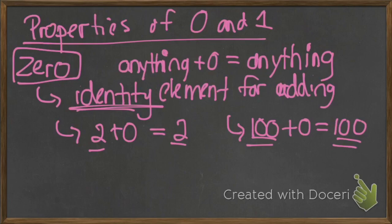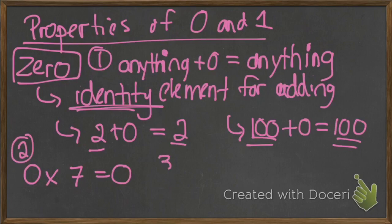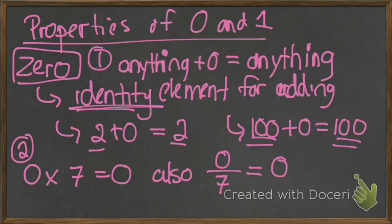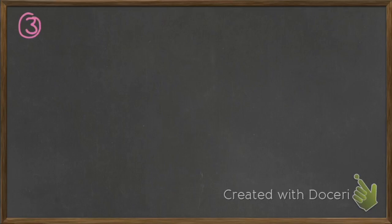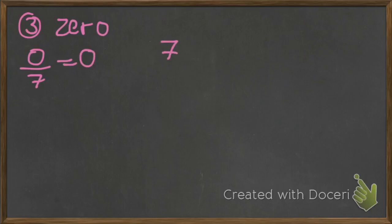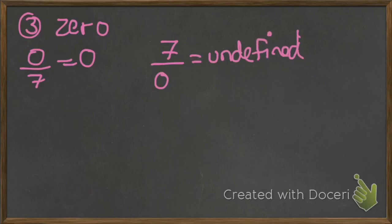The other thing to talk about is what happens when we multiply anything times 0 — it's equal to 0. So anything times 0 is 0. Also, 0 divided by 7 is 0. But the third important thing about 0 is that although 0 divided by 7 is 0, 7 divided by 0 is undefined, which we will learn about in class or another lesson. You can't really divide 7 by nothing — you've got to divide it by something. So we say it's undefined, or it's an error.